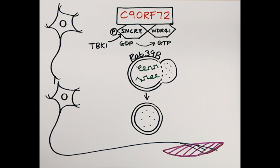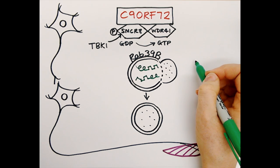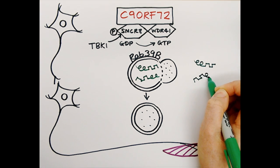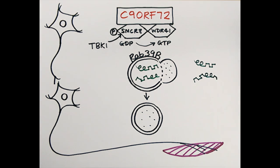So, what happens when C9-ORF72 expression, and thus the function of this pathway, is reduced? Well, the basal process of autophagy is partially impaired, which leads to accumulation of protein aggregates that would usually be cleared away.